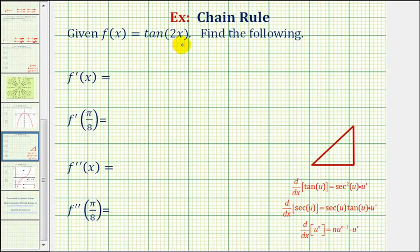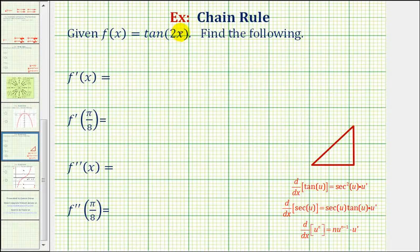Given f of x equals tangent 2x, we want to find f prime of x, f prime of pi over 8, f double prime of x, and f double prime of pi over 8. The first thing we should notice is the given function is a composite function, where the outer function is the tangent function and the inner function is the function 2x, which means to find the derivative, we must apply the chain rule.